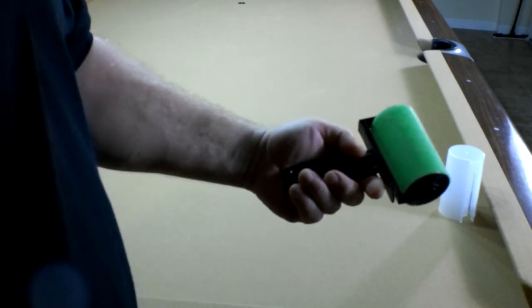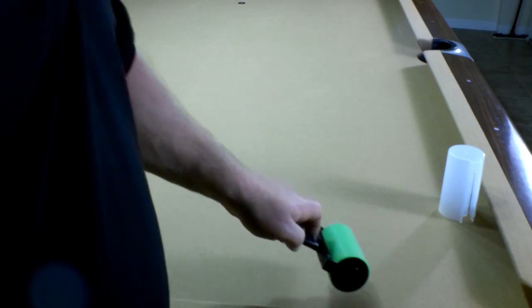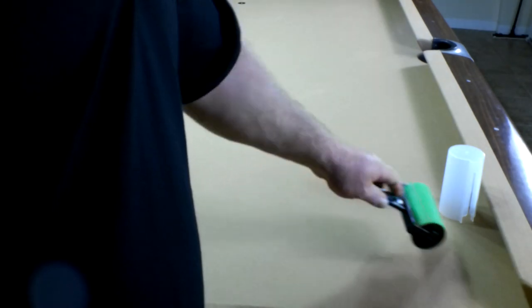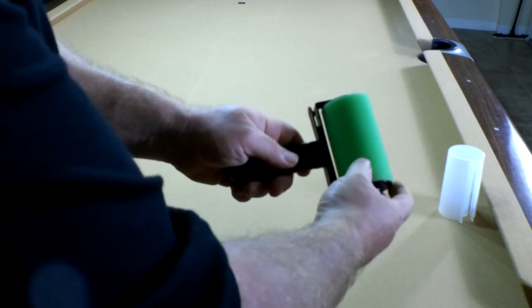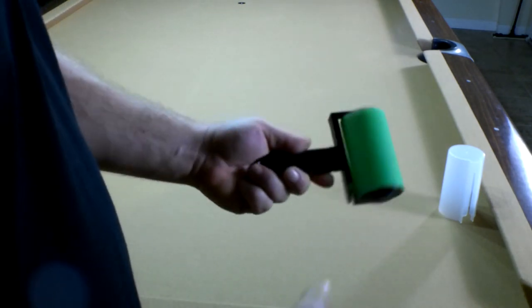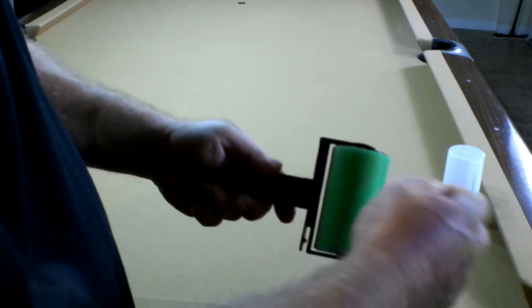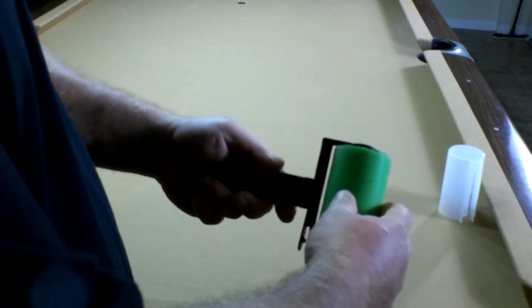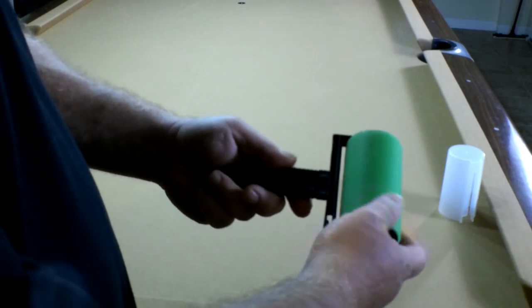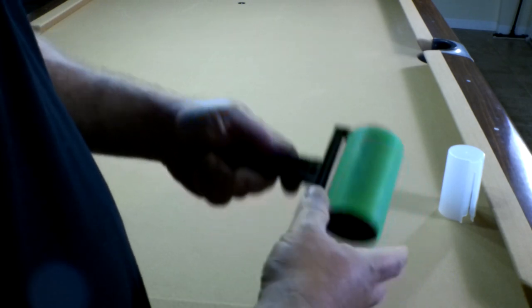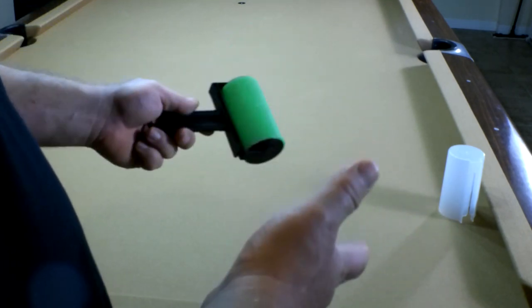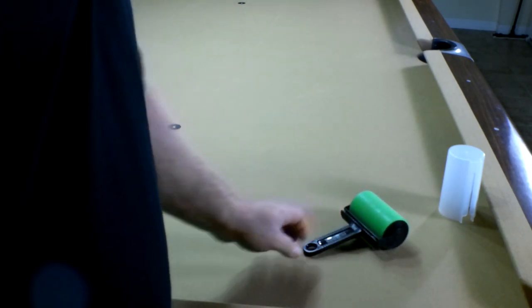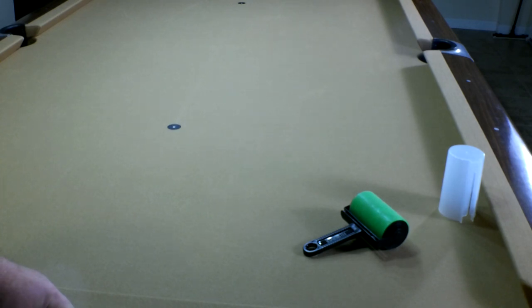Now I used this for one square foot of a table, and you can see it did pick up and it does what it says it's going to do. But now I have to clean this. It's not a peel type like a traditional lint brush. This material needs to be washed. So now I have to wash it, rinse it, to do another square foot. I'm working with a nine-foot table here, and it will literally take me an hour to clean this table.